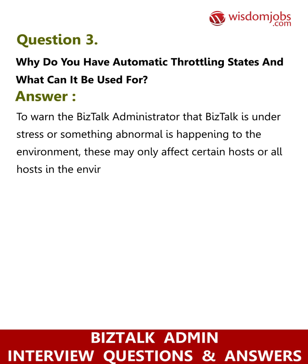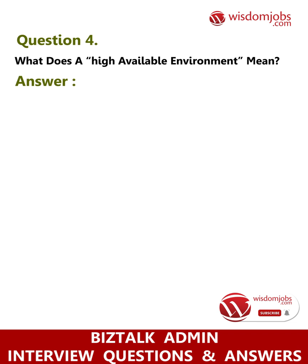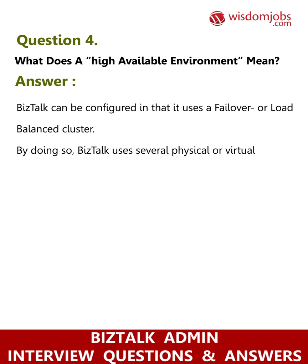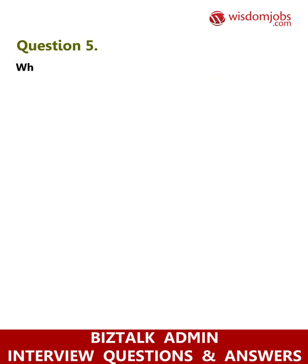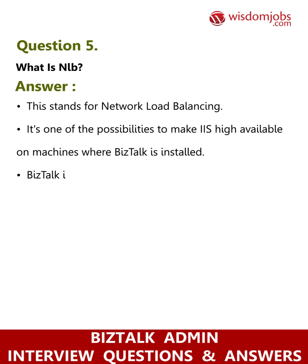These throttling states may only affect certain hosts or all hosts in the environment depending on the throttling state. Question 4: What does a high availability environment mean? Answer: BizTalk can be configured so that it uses a failover or load balanced cluster. By doing so, BizTalk uses several physical or virtual machines to spread the workload. In case one of the machines goes down, BizTalk is still able to process workload on the other machines. Question 5: What is NLB? Answer: This stands for Network Load Balancing. It's one of the possibilities to make BizTalk highly available on machines where BizTalk is installed. BizTalk itself, however, has its own load balancing.